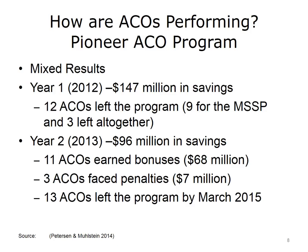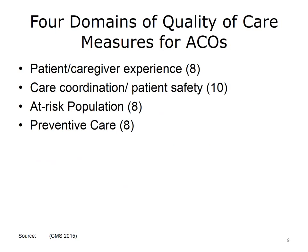There were also mixed results in the Pioneer ACO program. In this program, there are savings generated and, in some cases, shared. In year one, the program generated $147 million in total program savings. In year two, $96 million in total program savings was generated, and 11 ACOs received bonuses. However, three of the ACOs faced penalties. In each year, Pioneer ACOs have left the program, most moving to the MSSP.